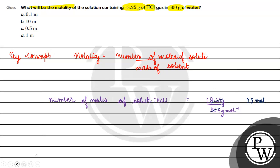If we talk about mass of solvent, mass of solvent will be equal to 500 grams. We will convert it to kg. How will we convert to kg?